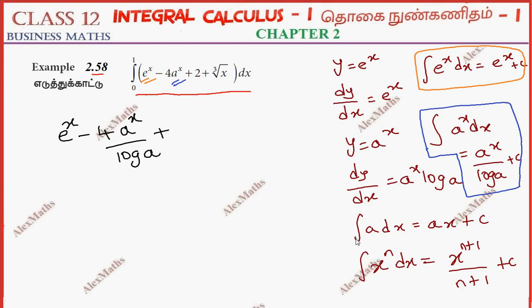constant into x, 2 is 2x, x power 1 by 3